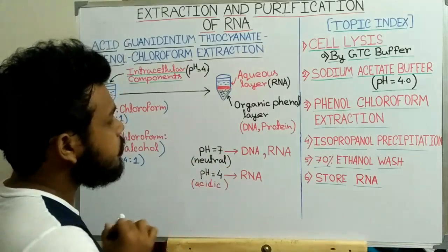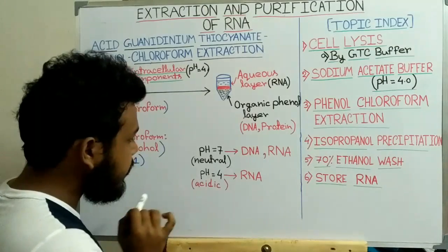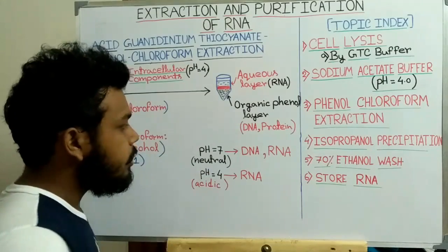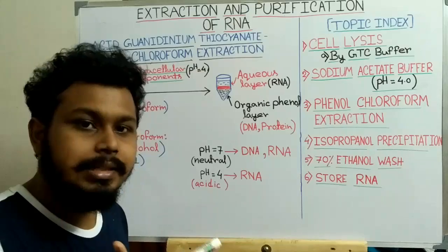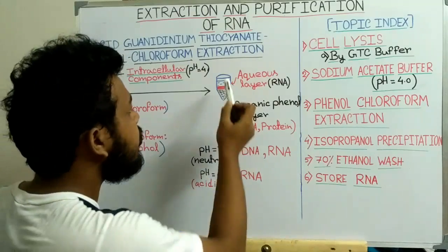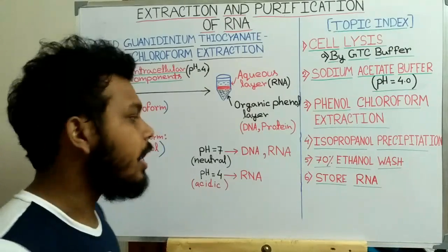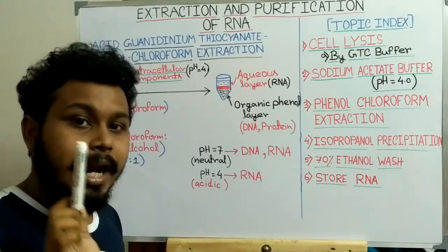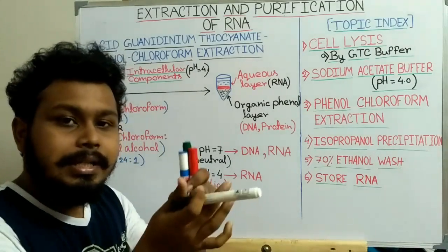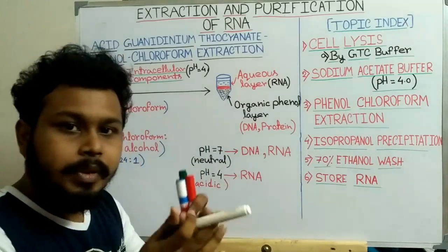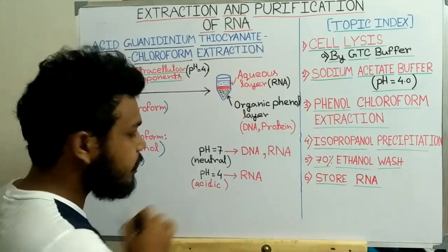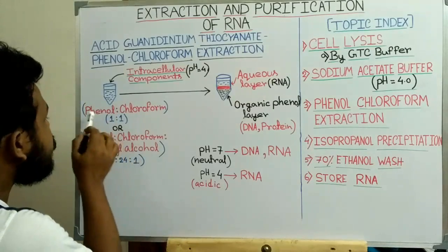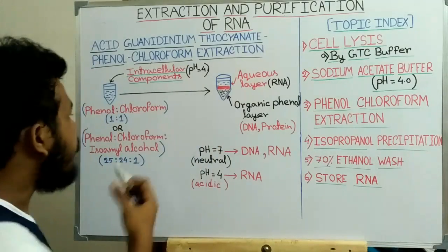Why use acidic pH rather than neutral pH? At neutral pH 7, both DNA and RNA are negatively charged and are both attracted to the aqueous phase. That's why both DNA and RNA would be present in the aqueous layer at neutral pH, and we would not be able to separate them from each other. That is why acidic pH is required.